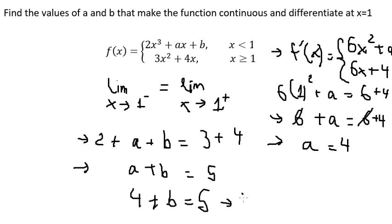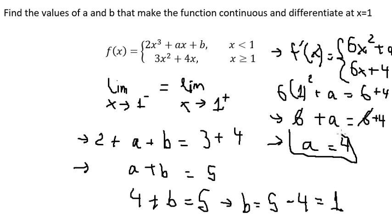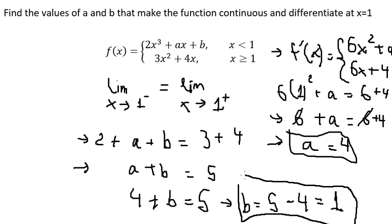Now we can find b. From our first equation, b equals 5 minus a, so b equals 5 minus 4, which equals 1. Therefore a equals 4 and b equals 1. That is the answer. This is the end — thank you for watching.